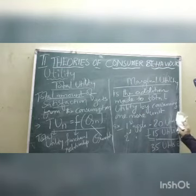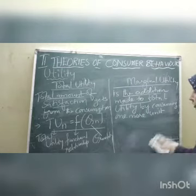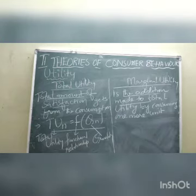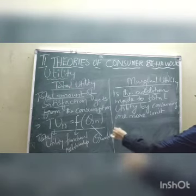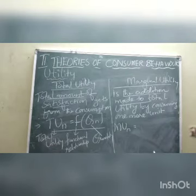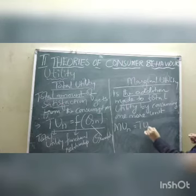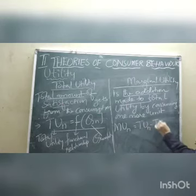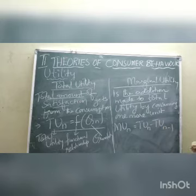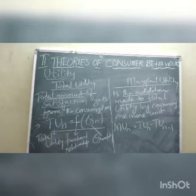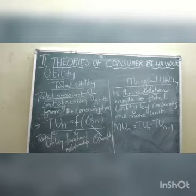The formula for marginal utility is: MU(N) = TU(N) − TU(N−1). That is, the marginal utility of the Nth unit equals the total utility of N units minus the total utility of N−1 units.